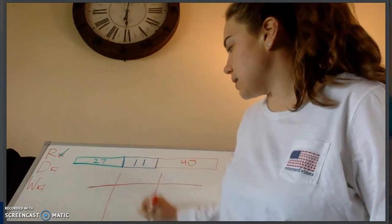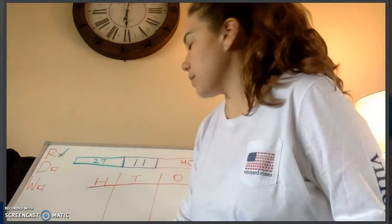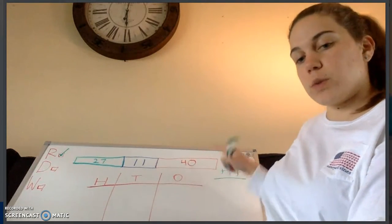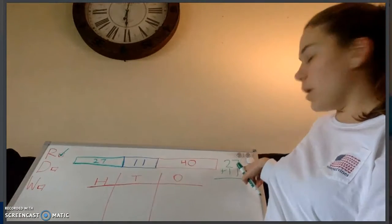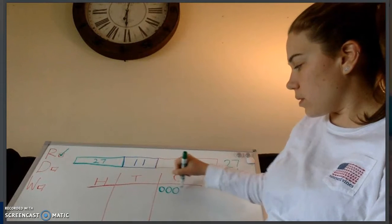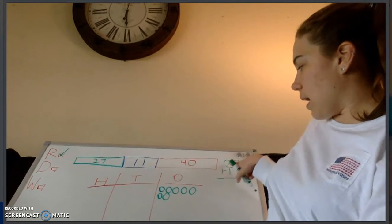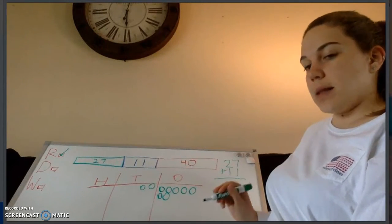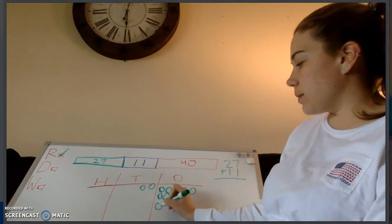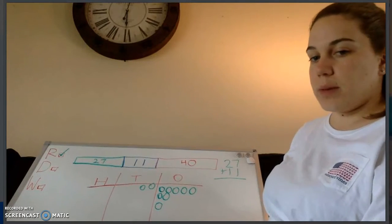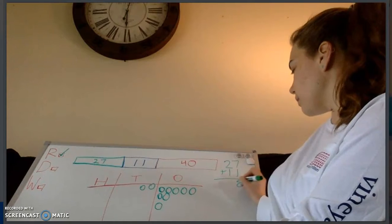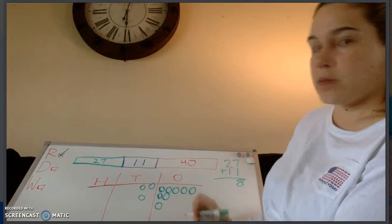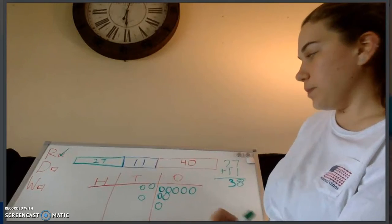I have my hundreds, tens, and ones columns. I'm going to start with 27 plus 11. First I'll show 27 on my place value chart: seven ones and two tens. Now I need to add 11. Do we start in the tens or the ones column? We always start in the ones column. So we add one: we had seven and added one more — now we have eight. Now the tens column: we had two and we add one more, so now we have three. So we have 38 so far.